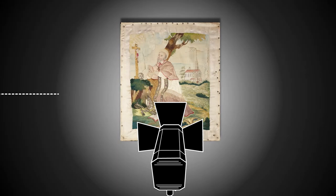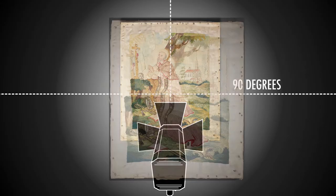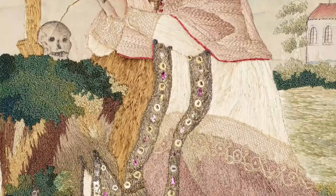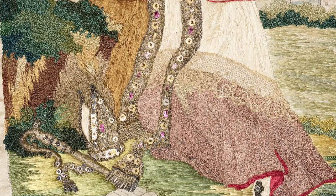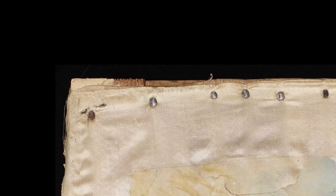The light is placed at a 90 degree angle to the object, exposing the cockling of the canvas, the sheen of the embroidery and the metallic beads. Here we can see that the canvas has shifted with time, causing rippling in the fabric.